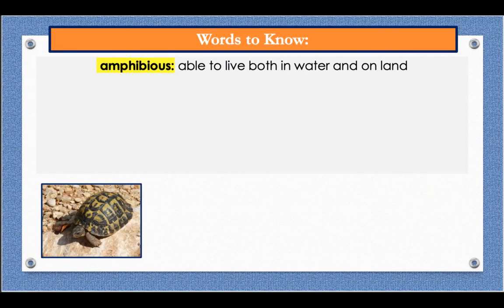Here are the words we're listening for today. The first word is amphibious. Amphibious means able to live both in water and on land. An example: our frog tank has areas of dry land and water for swimming because frogs are amphibious.